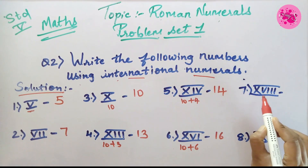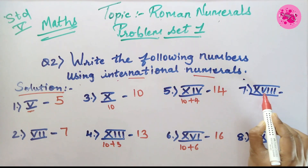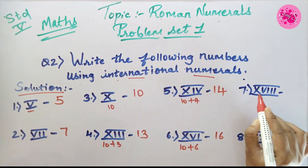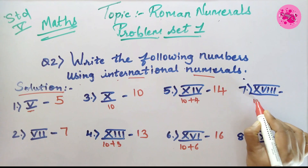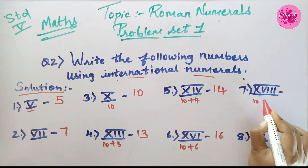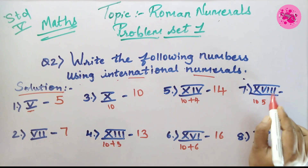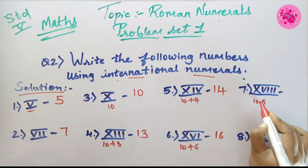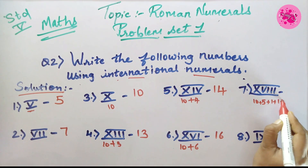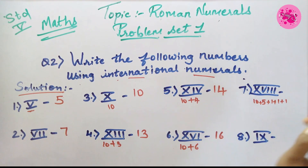Number 7: The Roman numerals X, V and III are given. X is the symbol of 10, V is 5, and there are three I's. That means 10 plus 5 plus 1 plus 1 plus 1, so we get the answer 18.